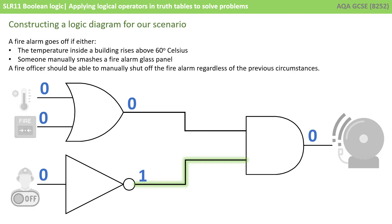The temperature isn't above 60 degrees, so we've got a zero there in the OR gate. No one has smashed a fire alarm point, so that's a zero. And the fire officer hasn't activated the manual override, so the fire officer is also inputting a zero. That means the NOT gate flips a one out the other side, but that's fine because the fire alarm only goes off if both inputs to the AND gate are active.